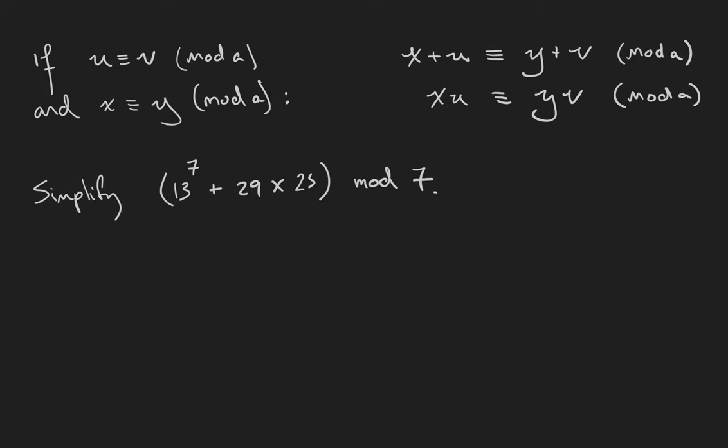Let's calculate 13 to the 7th power plus 29 times 25 modulo 7. Now what you could do to simplify this is you could calculate this number and then take its remainder modulo 7, and that would give you the simplest integer that it's equivalent to. Or you can do your equivalences first before you do the calculation.